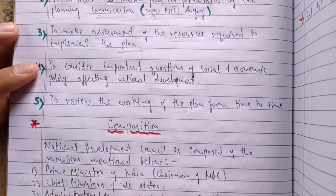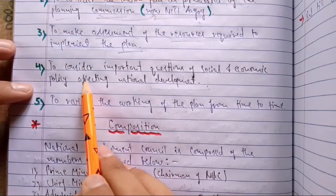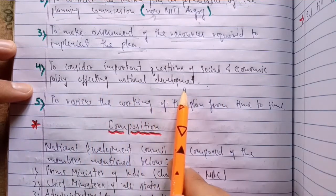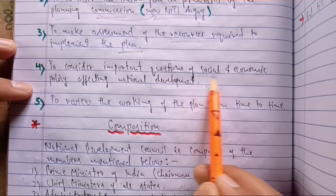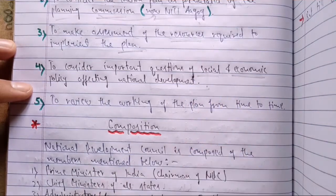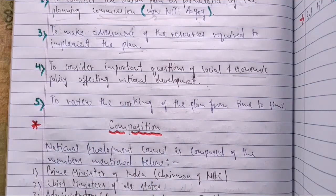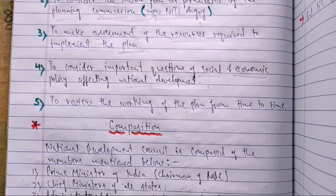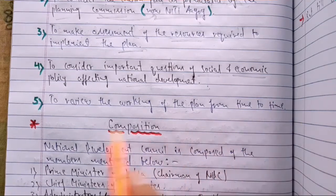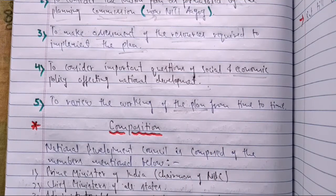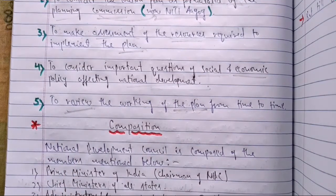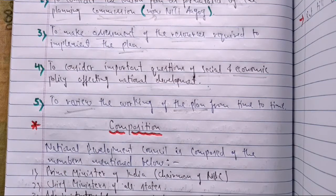Fourth, to consider important questions of social and economic policy affecting national development — it was the responsibility of NDC to look into social and economic policies that could affect national development in relation to any national plan. Fifth, to review the working of the plan from time to time — since situations change with time, it was very important for NDC to review and reconsider the plan periodically to ensure it remained relevant and effective.